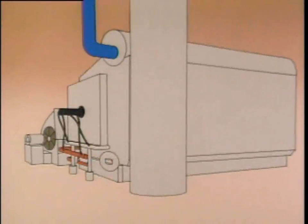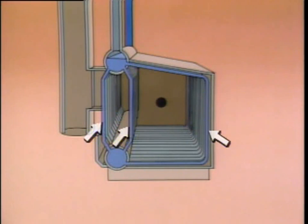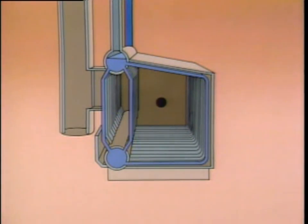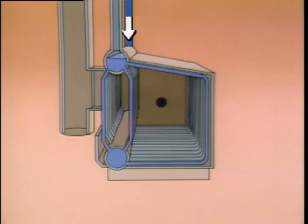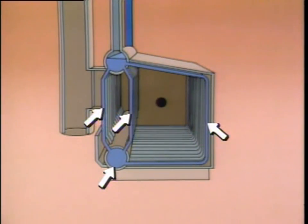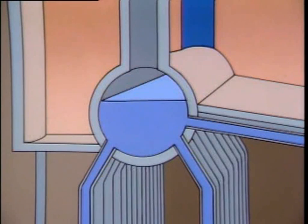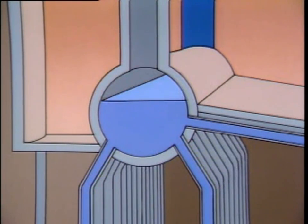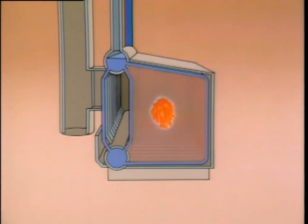Water tube boilers use tubes to route water and steam through the boiler, with combustion gases flowing past the outside surfaces of the tubes. This particular boiler consists of a series of water tubes and two drums that distribute water to the tubes. The water tubes connect the drums and form a wall around the combustion area where heat is generated. Water is fed into the upper drum through a feed water inlet line. The water tubes and the lower drum are completely filled with water, while the upper drum is only filled to a certain level, providing space for steam to collect — so it's often called the steam drum. As fuel is burned in the combustion area, heat is transferred to the adjacent water tubes.